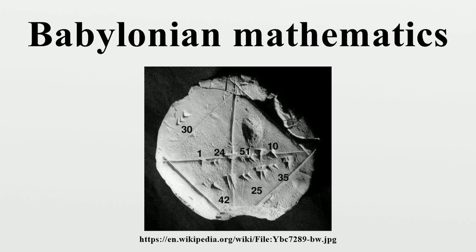Further periodicities included: 251 months equals 269 returns in anomaly; 5,458 months equals 5,923 returns in latitude; and 1 synodic month equals 29,31,50,08,20 days. The Babylonians expressed all periods in synodic months, probably because they used a luni-solar calendar.